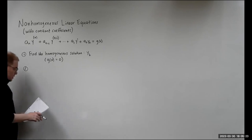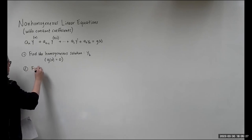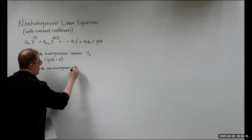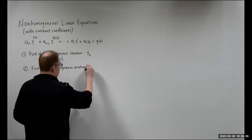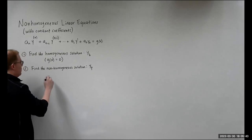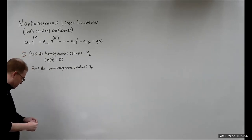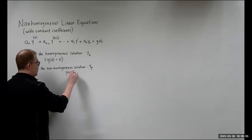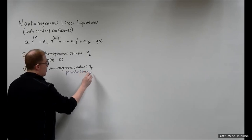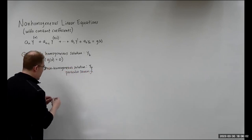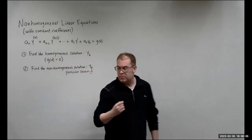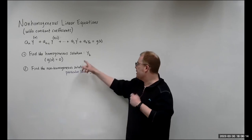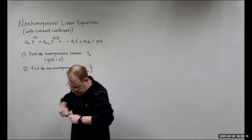Once we find the homogeneous solution, we can find the non-homogeneous solution, which we call the particular solution — y of p. In some books, they call the homogeneous part the complementary function or complementary solution, sometimes denoted y of c, but it's the same idea.